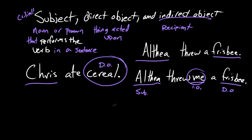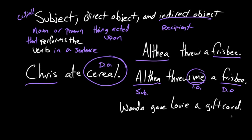Rosie, would you read me this sentence please? "Wanda gave Louis a gift card." That's very nice of her. So walk me through this — what are the relationships between the components of this sentence? We have two people, and the first person listed is the subject of the sentence because she's doing an action — she's doing the giving. Then we have a direct object, which is a gift card — that's the object she gave. But the gift card has a recipient, and that's Louis, and he's the indirect object.